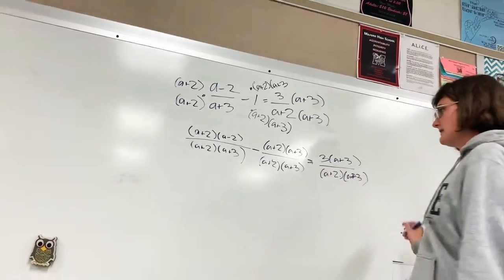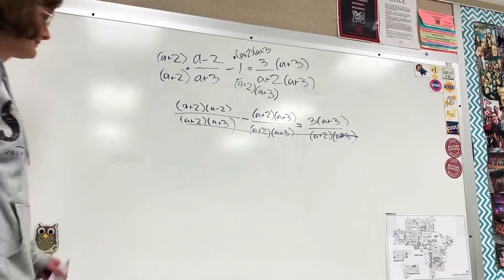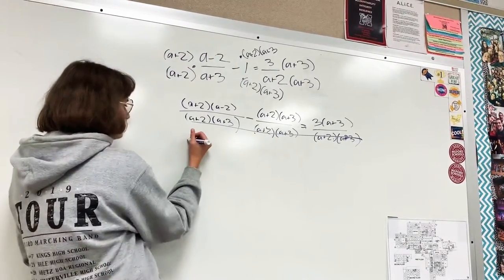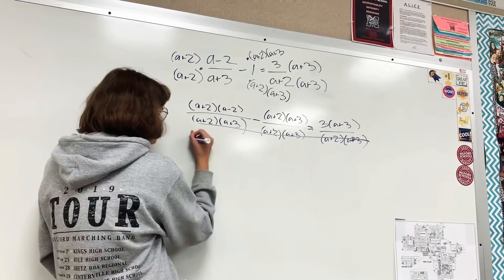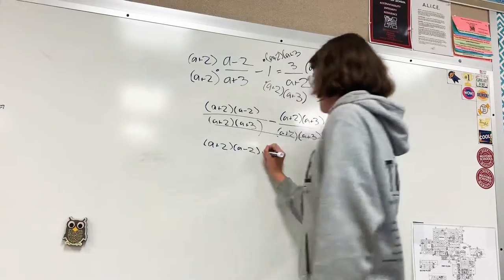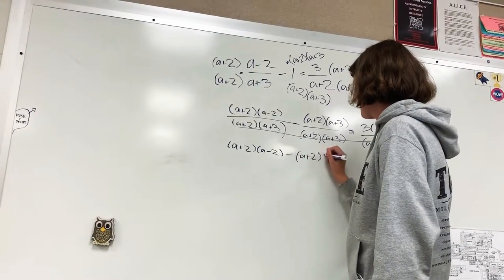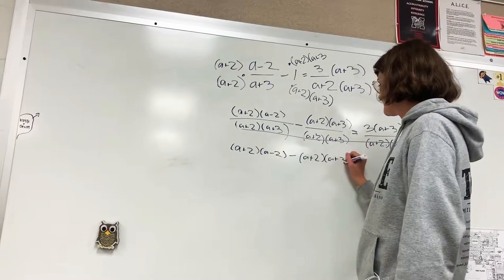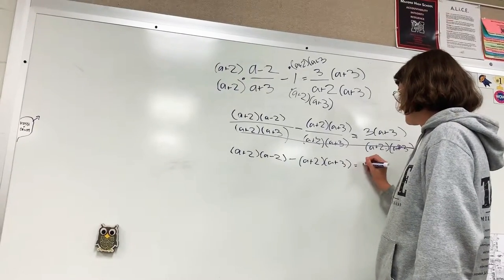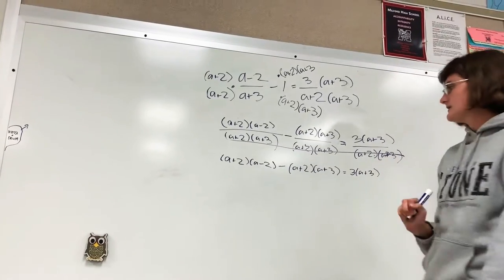So you notice these all have a common denominator, so now you can just kind of stretch the bottom out, and then end up with (a+2)(a-2) minus (a+2)(a+3), and then that equals 3(a+3).